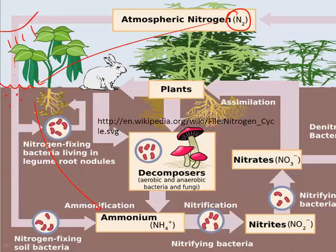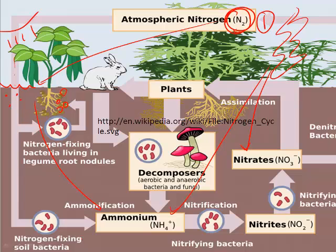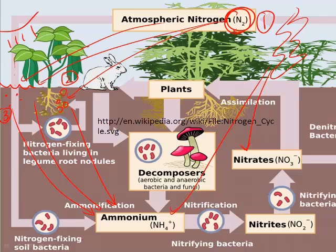So we have three ways to convert atmospheric N2 into something plants can actually use. The first is lightning, which converts N2 into nitrate and ammonium. The second is nitrogen-fixing bacteria in the nodules of legumes, which convert N2 gas into ammonium ions. The third is cyanobacteria, which through photosynthesis convert N2 in the atmosphere into ammonium.